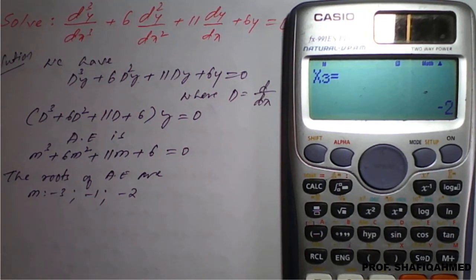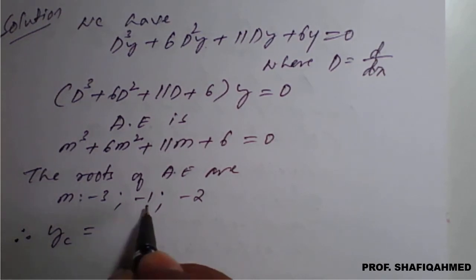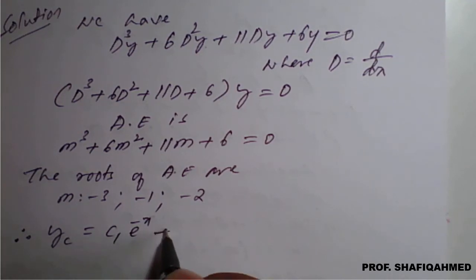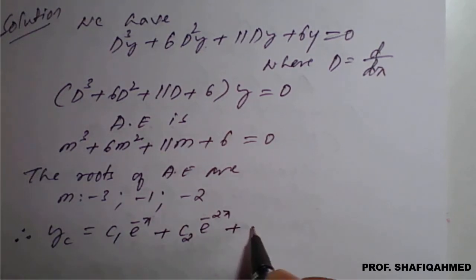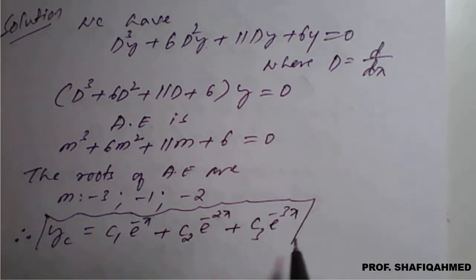Therefore, the complementary function yc is equal to, in order, minus 1, minus 2, minus 3. I will take minus 1 first. So c₁e^(-x). Why I have taken minus x? Because the differential equation is with respect to x. That is why minus x plus next root, c₂e^(-2x) plus next root, c₃e^(-3x). This is the complementary function, that is cf or yc.